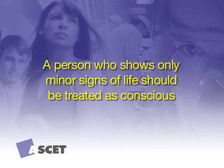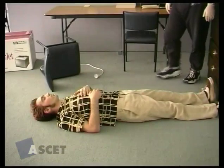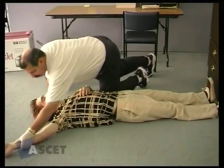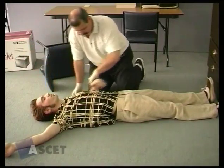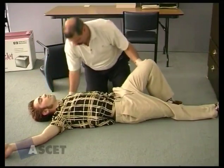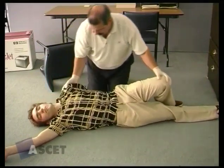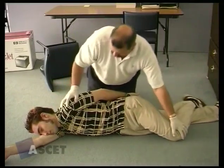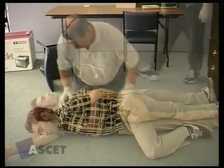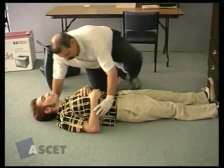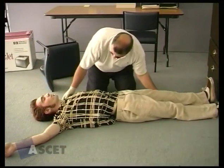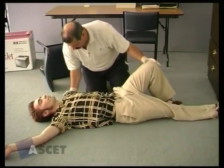If the victim is unconscious, you need to put them in the recovery position and begin steps A, B, C, D. If the person is showing signs of consciousness, put them into the recovery position. The recovery position is very important as it assists in maintaining an open airway in the event that their tongue falls back and blocks the airway or they begin to vomit. Put the arms out at right angles, bend their leg and gently roll them onto their side using your knees to support their back.